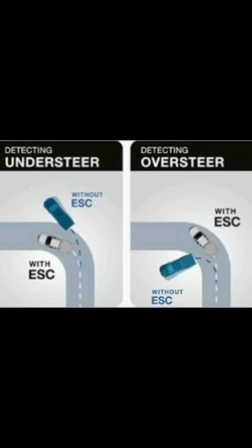Automatic Brake and Engine Power Control: the system applies brakes to specific wheels to bring the car back under control. Additionally, engine power is adjusted to control oversteering or understeering, restoring vehicle stability.